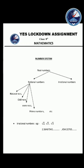All other numbers are rational numbers. Natural numbers, all odd numbers, all even numbers, all prime numbers - they all are rational numbers.